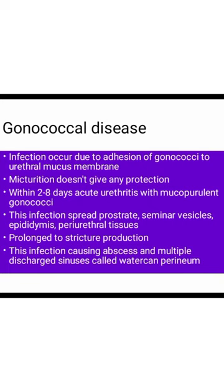Within the incubation period, acute urethritis occurs with mucopurulent discharge of gonococcal bacteria. This infection also spreads to the prostate, seminal vesicles, epididymis, and periurethral tissue. If treatment does not occur, stricture formation develops, and this condition is called Watering Can Perineum.